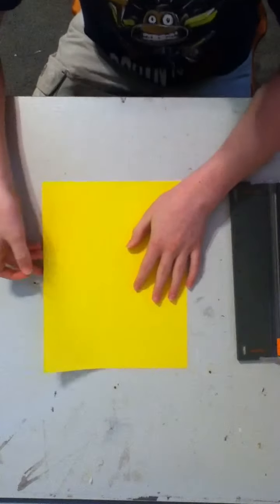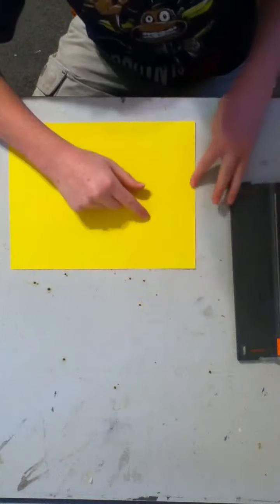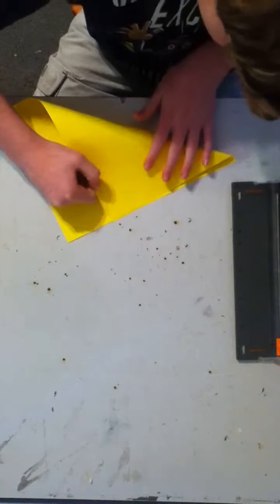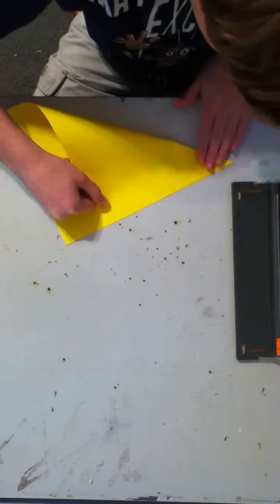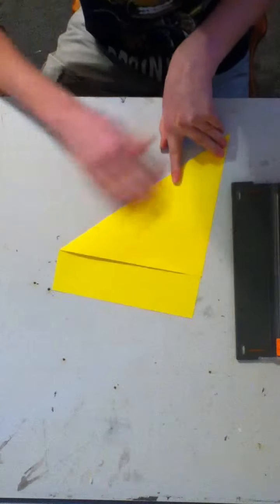First thing you're going to do is get a piece of paper. You can use printer paper or any paper. All you need to do is make it into a square. So what we do is take this edge and bring it over to this edge. Fold it over. Make sure there is a really good point and make a crease.